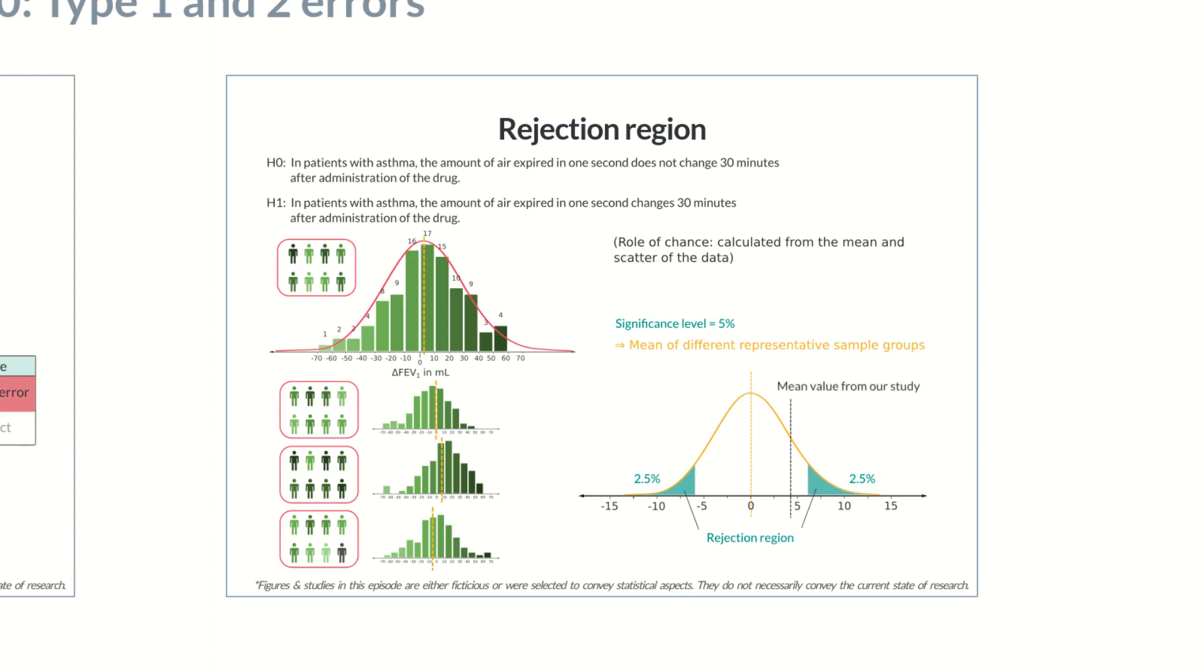Now let's plot the result of the study. As you can see, the value isn't located in the rejection region, meaning that the study couldn't prove a difference in the FEV1 value before and after administration of the new drug.